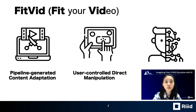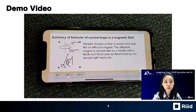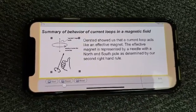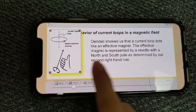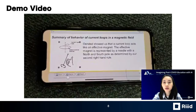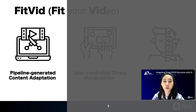Fitbit is an interactive video interface that provides pipeline-generated content adaptation, user-controlled direct manipulation, and customized content adaptation. Before diving into design goals and the computational pipeline, I first want to share the demo video of Fitbit. Now, I will introduce the computational pipelines to build this system. Our computational pipeline generates content adaptation to make video learning content more readable and digestible on the small screens of mobile devices.